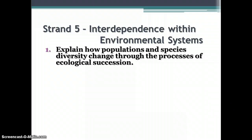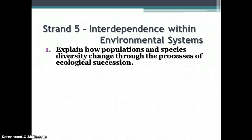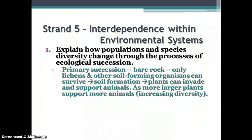Strand five is about interdependence within environmental systems — the ecology part of biology. Since we recently finished this, it shouldn't be difficult to answer questions about it. Most students did really well on the ecology test. First, explain how populations and species diversity change through the process of ecological succession — how an area changes after some kind of disaster. Primary succession begins on bare rock.